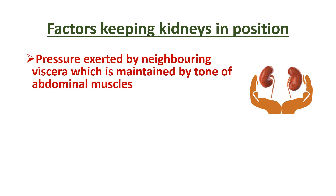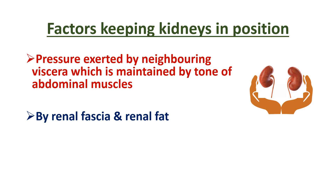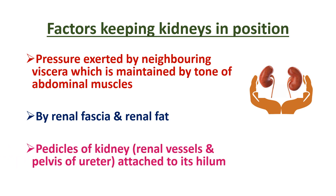Coming to the factors keeping the kidneys in position: the first factor is the pressure exerted by the neighboring viscera, which is maintained by the tone of abdominal muscles. Kidneys are also kept in position by renal fascia and renal fat, and are supported by the pedicles of the kidney — that is, the renal vessels and pelvis of the ureter — which are attached to the hilum of the kidney.